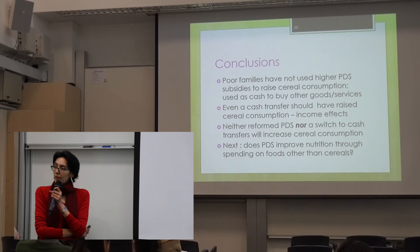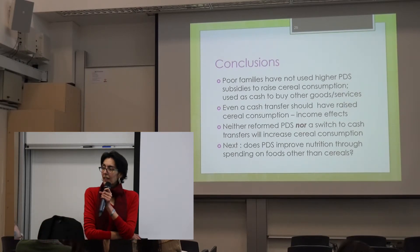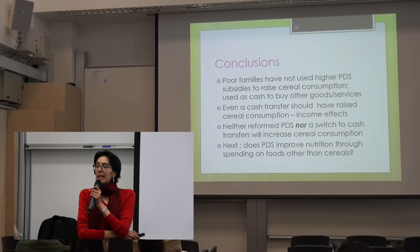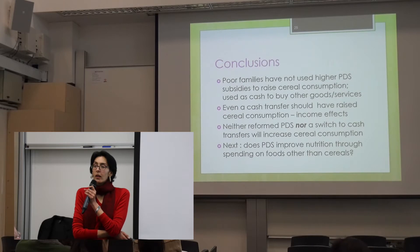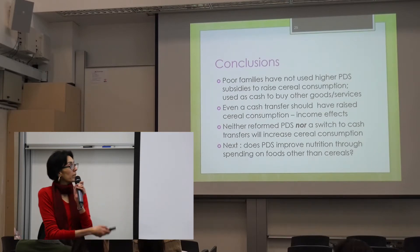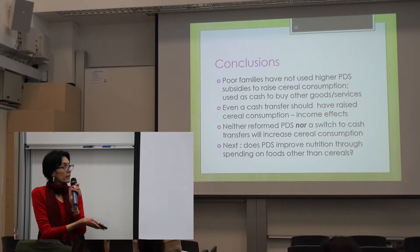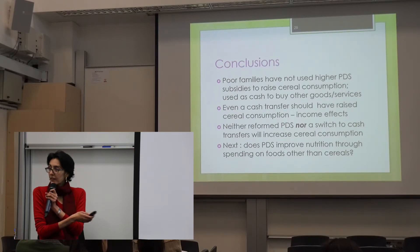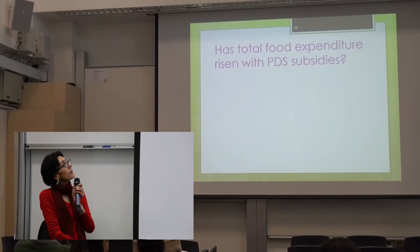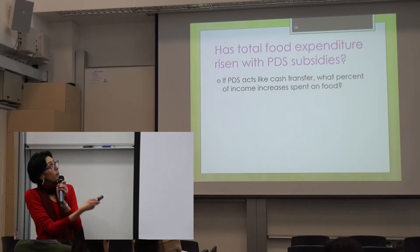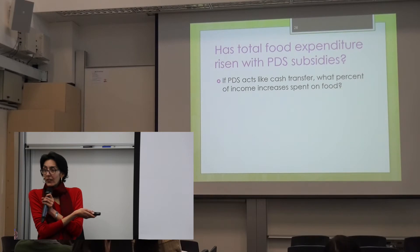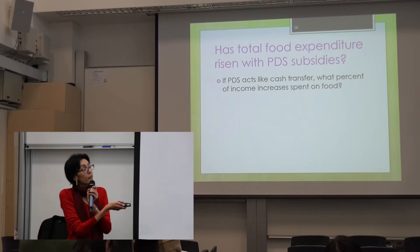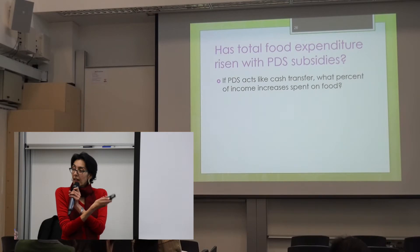It might be argued that cereals are just one part of the diet, and nutrition depends not just on how much rice and wheat they're eating but also on meat, milk, fruit, vegetables, and all the other food groups. So it becomes meaningful to ask whether the PDS is improving nutrition by increasing spending on foods other than cereals — are they buying other food with it? If the PDS is acting like a cash transfer, what you really want to know as a policy maker is what percentage of income increases are being spent on food. That's what the next set of data is looking at.